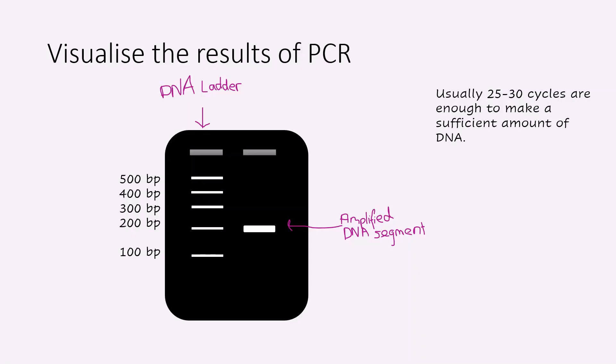These steps are performed in a thermocycler and usually 25 to 30 cycles are required to produce a sufficient amount of DNA copies.